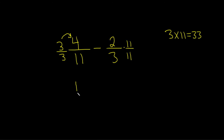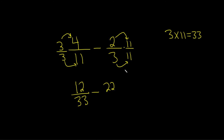3 times 4 is 12, and 3 times 11 is 33. Minus 2 times 11 is 22, over 3 times 11 is 33. Now, because we have like fractions — they have the same denominators — we just subtract the numerators. 12 minus 22 is going to give us negative 10, and the 33 stays the same.